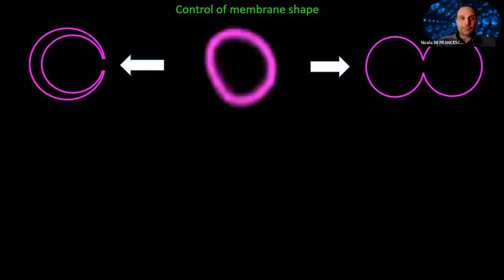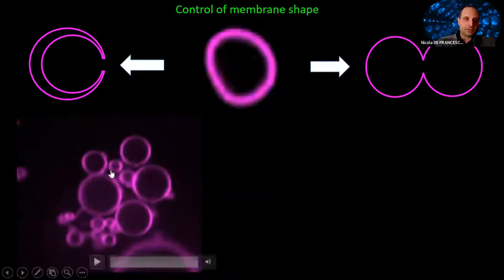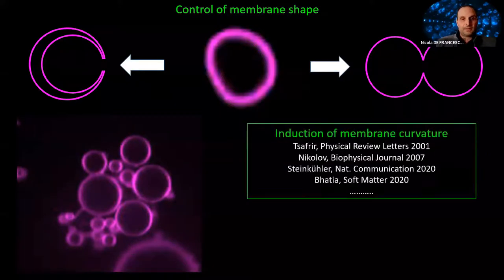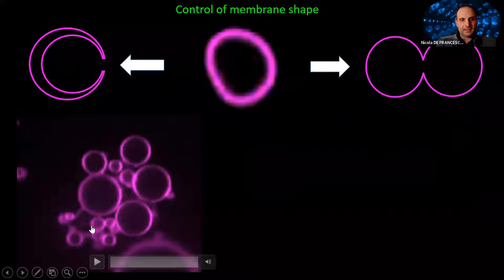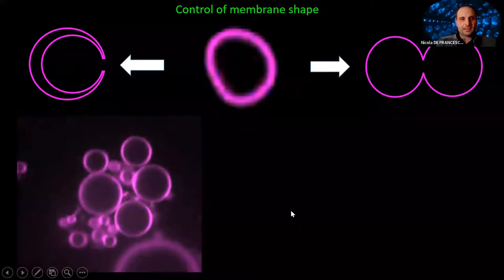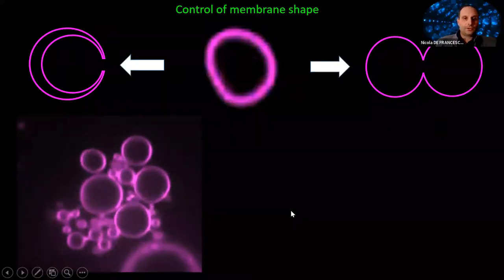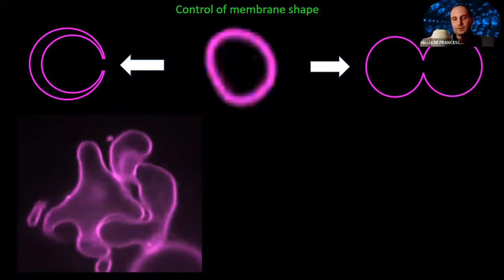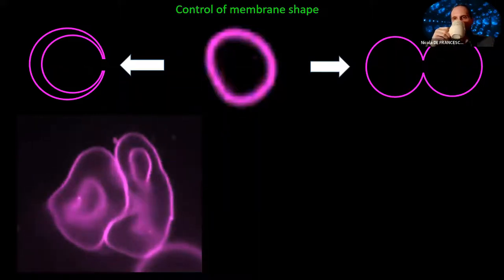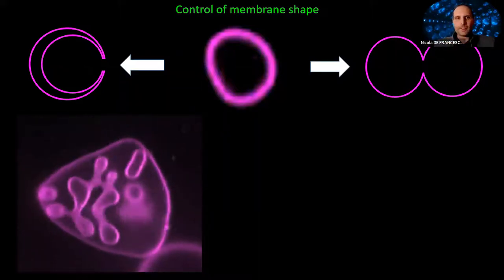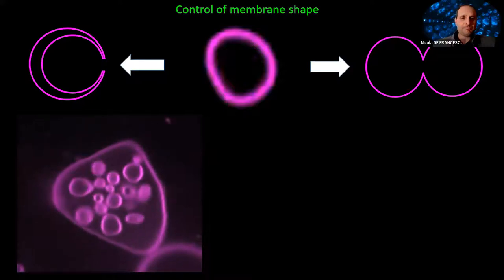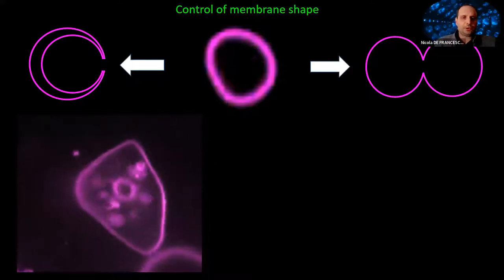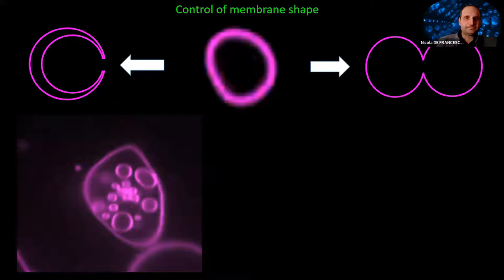Here's an example: a liposome shaped as a system of dumbbells. By applying an external stimulus, we can trigger a shape transformation into a stomatocyte. The question is, how do you control an object like this reliably?